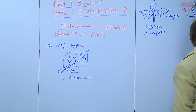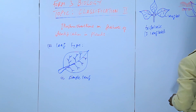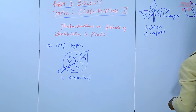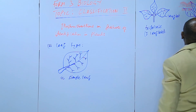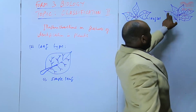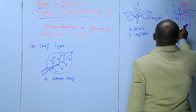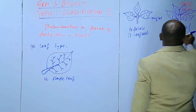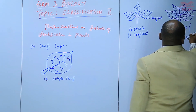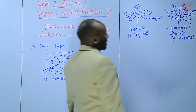This is another leaflet. This is a compound leaf that looks like the palm of the hand, with five leaflets. We call this a palmate, or a digitate. This one has five leaflets at the terminal end. So we have a trifoliate and we have a palmate.